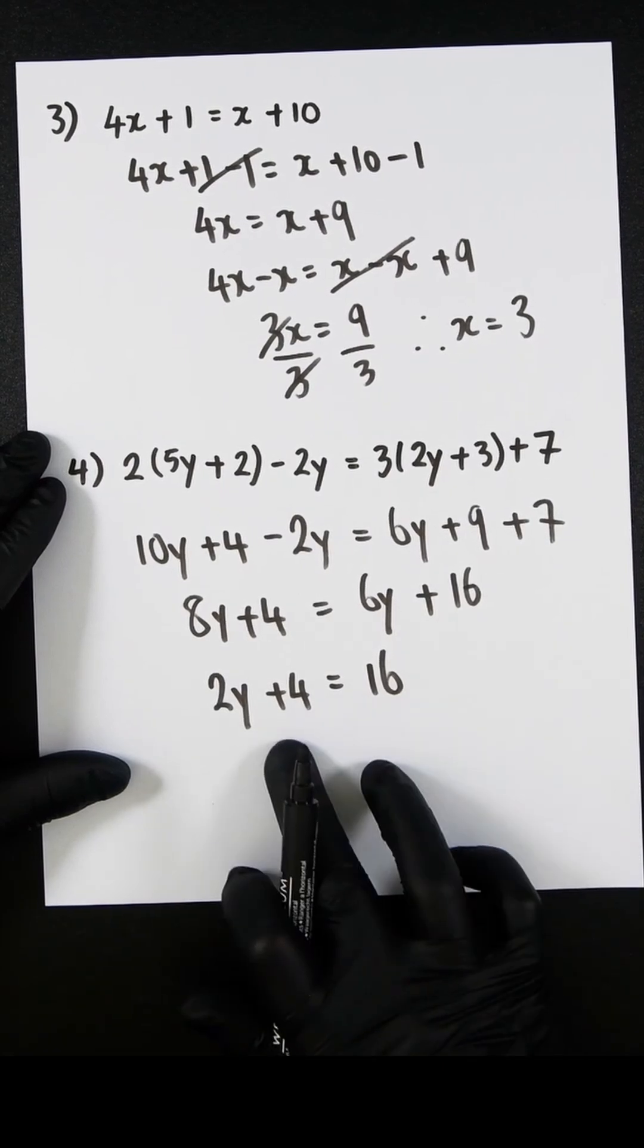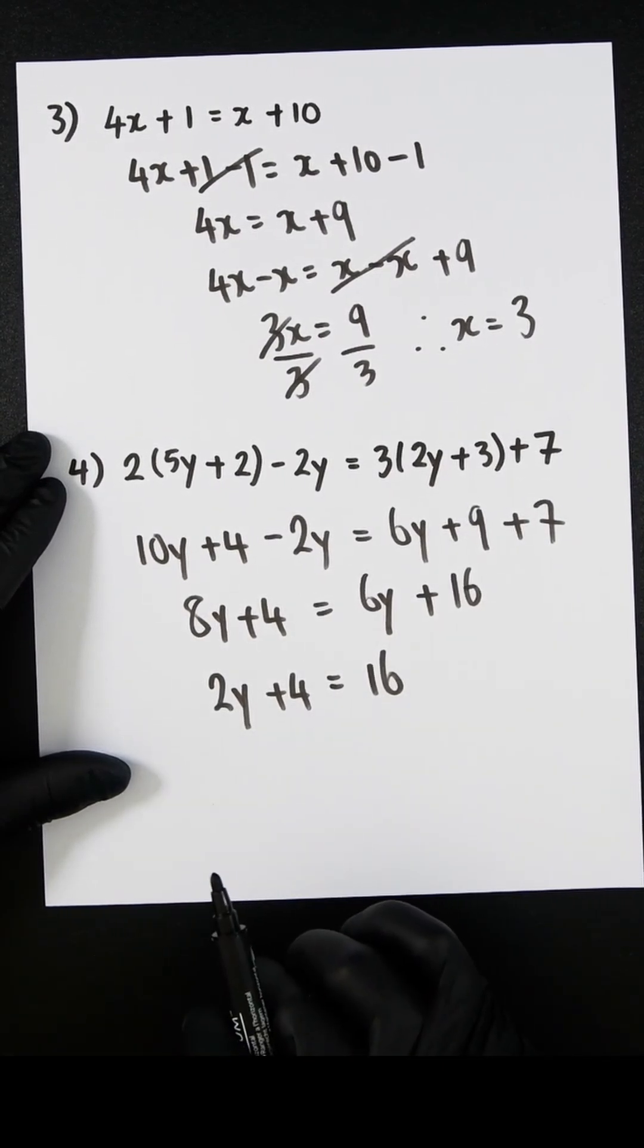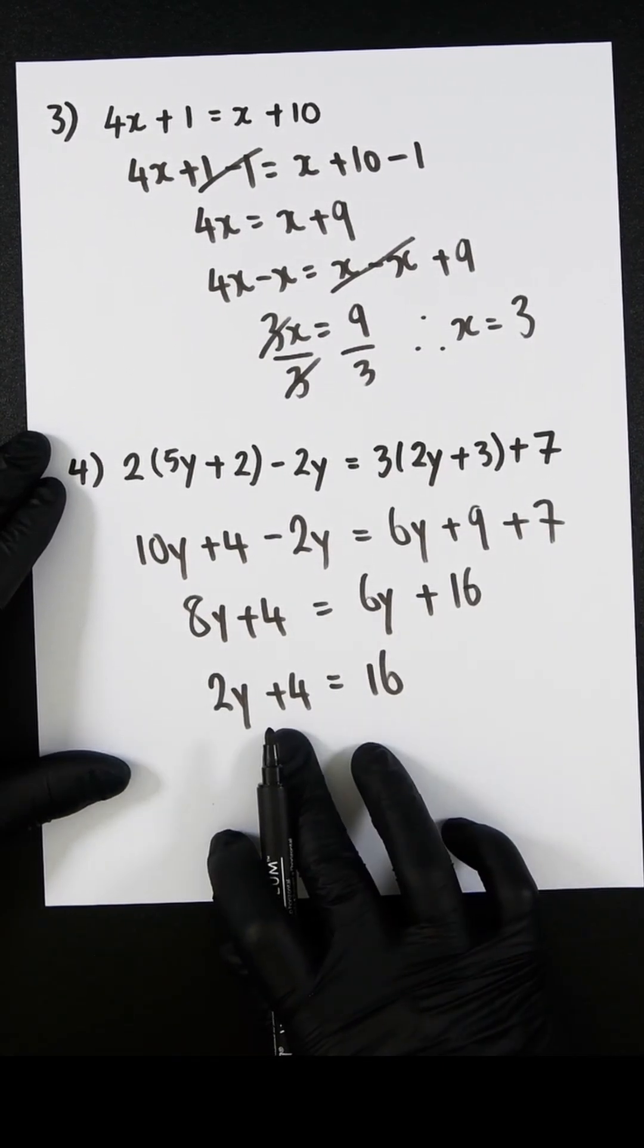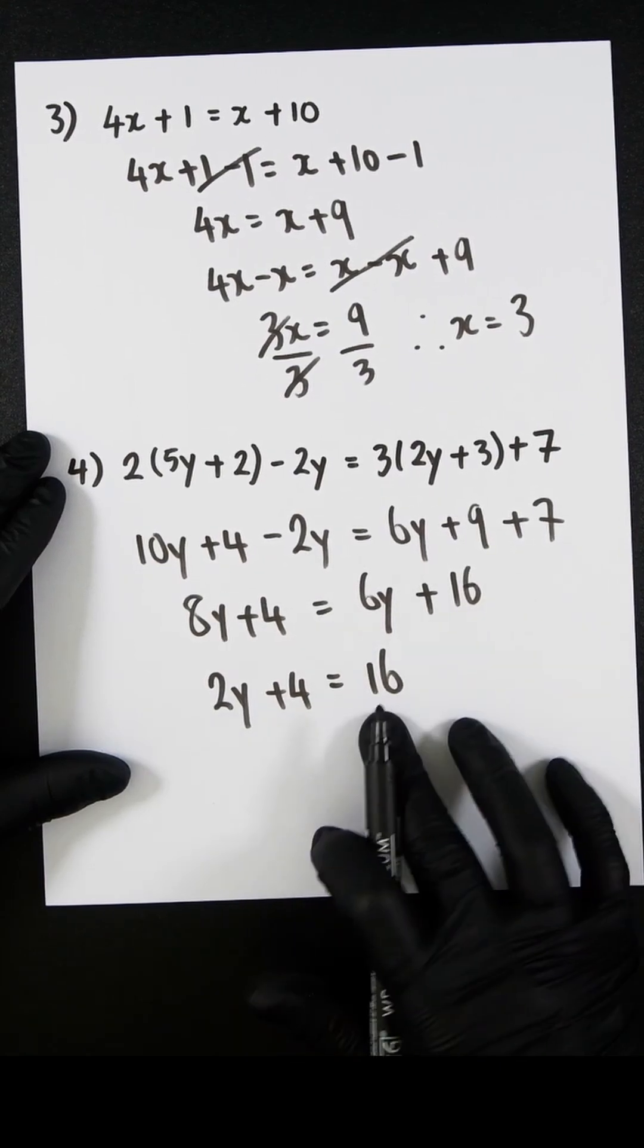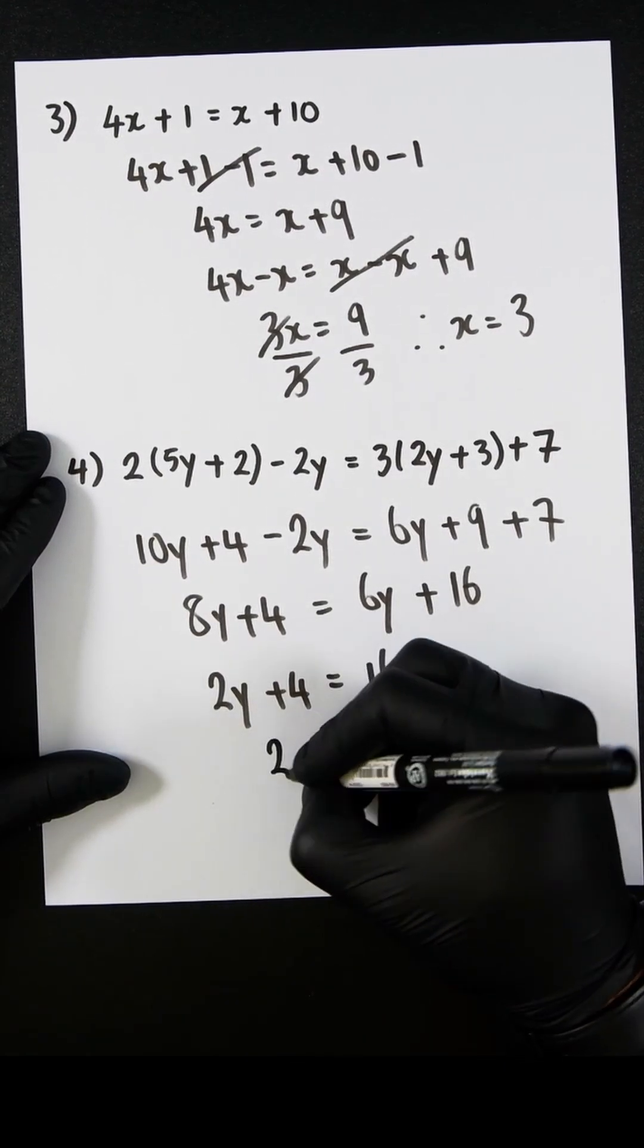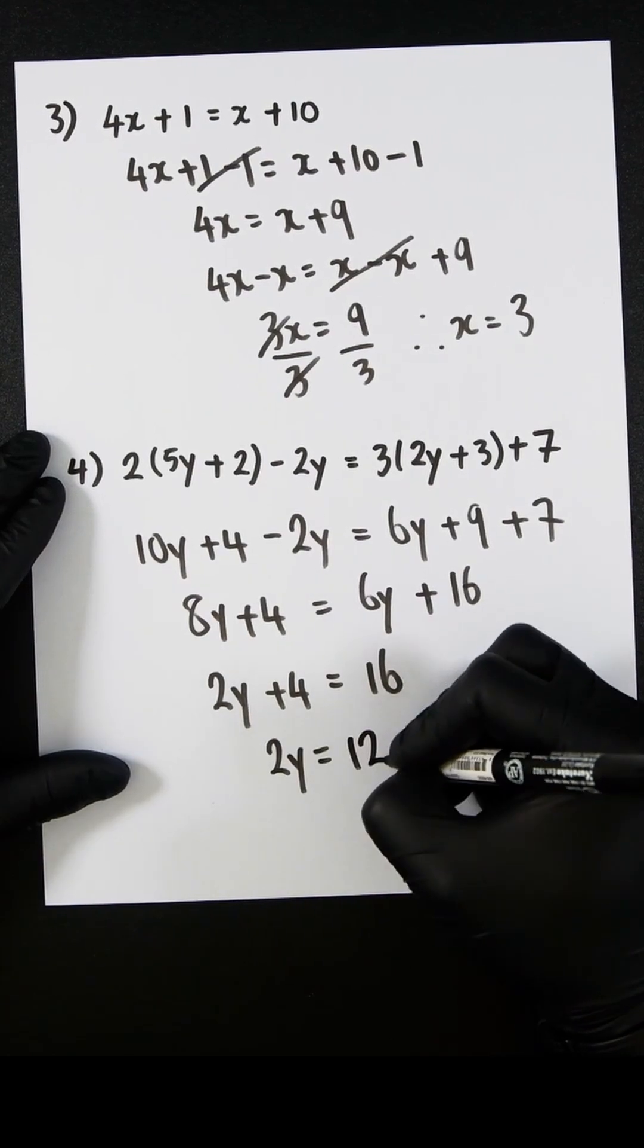And now let's subtract 4 from both sides, eliminating this 4 on the left-hand side. Minusing 4 from here would mean it would disappear. And 16 minus 4 would be 12. So 2y would equal 12.